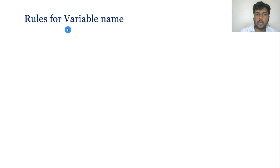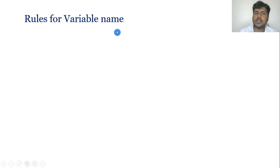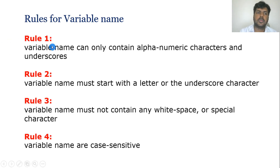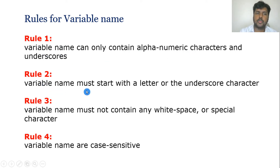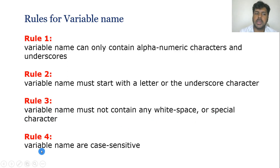Do we have any rules for variables? Yes. The same rules which we have for identifiers will be applicable for variable names as well. Rule one: variable name can only contain alphanumeric and underscore. Rule two: variable name must start with a letter or the underscore character. Rule three: variable name must not contain any white space or special characters. And rule four: variable names are case sensitive.